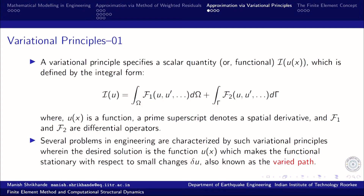In operator form, I[U] is given by a domain integral over some domain: F₁ is a differential operator comprising several functions U, U', U'', and so on — that is, U and its derivatives, evaluated over the domain. There is also a boundary evaluation term involving another operator that depends on several functions and their derivatives. Several problems in engineering are characterized by such variational principles, where the desired solution U is the basic unknown of the problem.